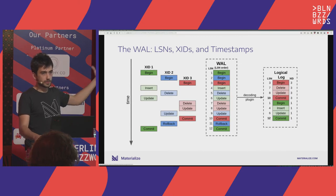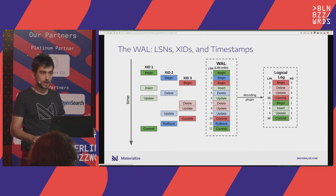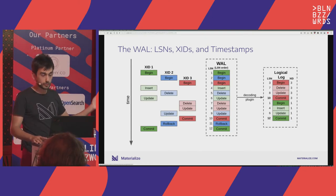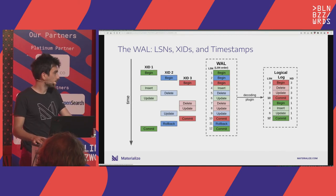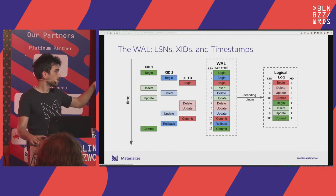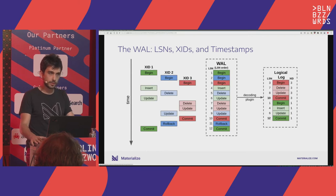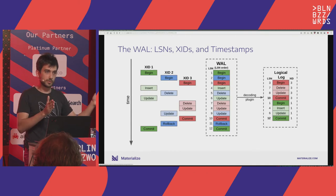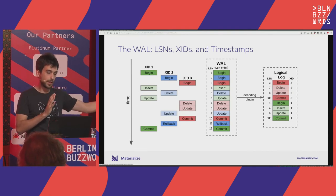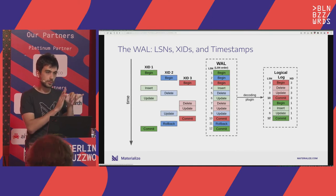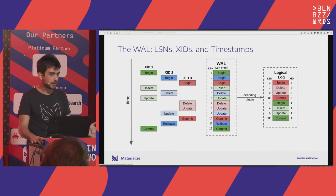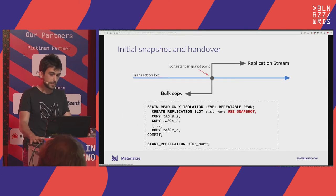Even though all transactions are written to the WAL, a background process garbage-collects and applies changes, so we don't keep an infinite history on disk. If we connect to an existing database, we can't just start reading the latest transaction — we need a snapshot of the data as it was at a particular LSN, as if we had applied everything in the WAL up to that point. After taking that snapshot, we want to continue reading the replication stream at exactly that point, with no gaps and no overlap.